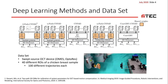To evaluate our methods, we consider a tissue dataset using a chicken breast sample and a swept-source OCT device. Overall, we acquire 100 sequences of OCT volumes for 40 different regions of interest of the chicken breast sample. We use various different trajectories for the movements and consider a sequence length of 5 OCT volumes.